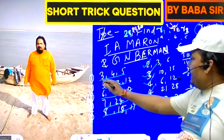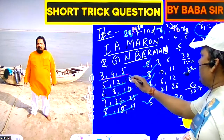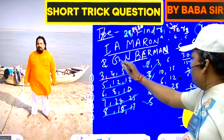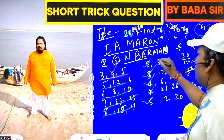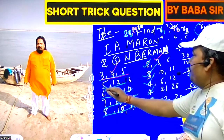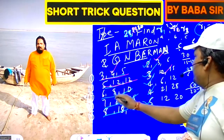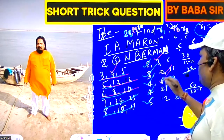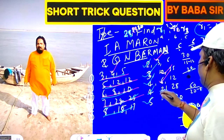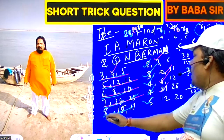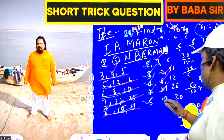Agar yeh right-angle triangle ke S mein hai — 3-4-5 mein pehli position 3 hogi. 5-12-13 mein 10 hoga. 6-8-10 mein 6 hoga. 7-24-25 mein 21 hoga. Aur 8-15-17 mein 12 hoga.